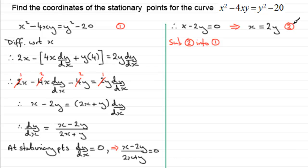And what does that give us then? Well, for x squared, we're going to have 2y all squared. So therefore, we have 2y all squared minus 4 times x. So we've got minus 4 times x. x being 2y. Multiplied by another y there. Equals y squared minus 20.